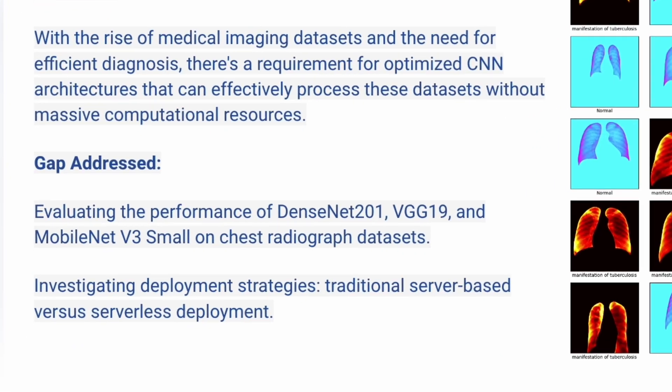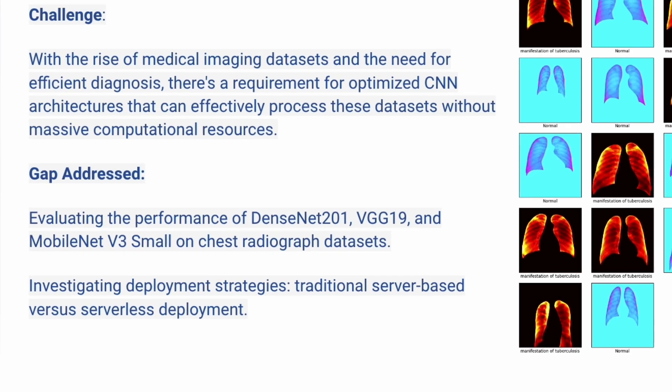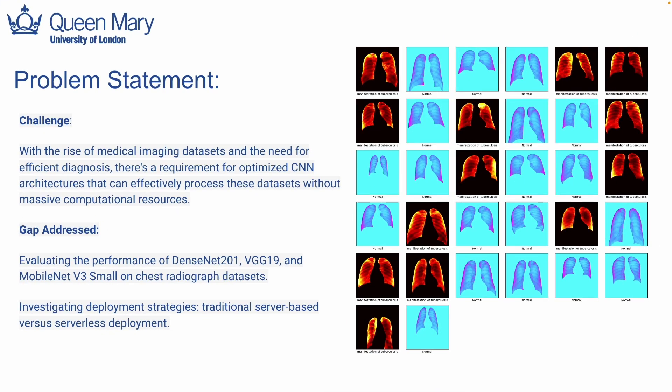Addressing these challenges, our initiative evaluates the performance of three advanced neural network architectures: DenseNet 201, VGG19, and MobileNet V3 Small, on chest radiograph datasets. We are also exploring deployment strategies that balance computational efficiency with precision. By bridging these gaps, we are not just aiming for technological advancement, but more importantly for enhanced patient care and accurate diagnosis.